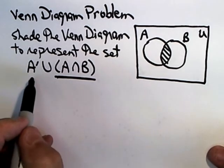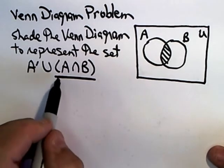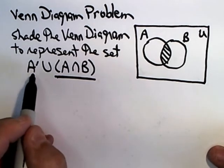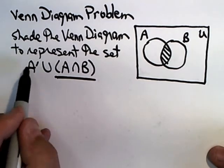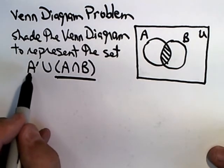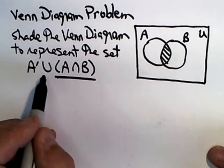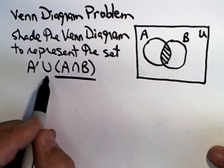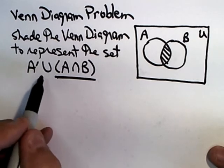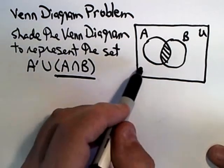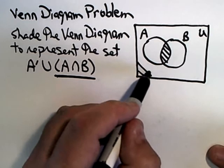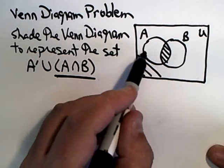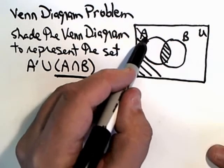Now I want to union that with A complement — so with the things that are not in A. I'm going to shade everything that's not in the set A. Union means anything that gets shaded is in the solution set, so I'm shading now everything that's not in the set A.